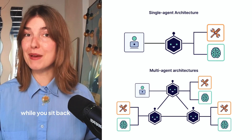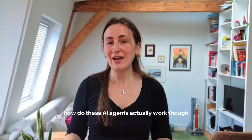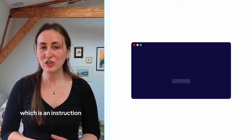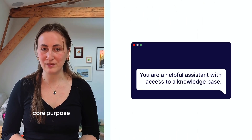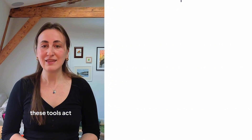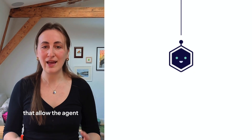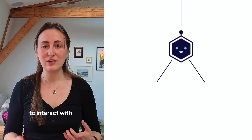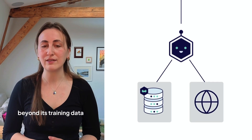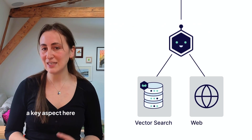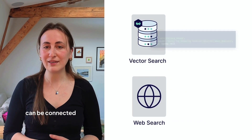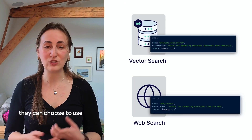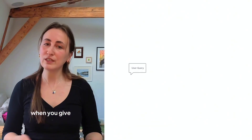How do these AI agents actually work? It often starts with a prompt, which is an instruction that sets the scene for the LLM and defines its core purpose. Next, you provide the agent with tools. These tools act like add-ons that allow the agent to interact with the real world beyond its training data and core functionalities. A key aspect here is often function calling, where LLMs can be connected to a predefined set of tools they can choose to use given the situation.